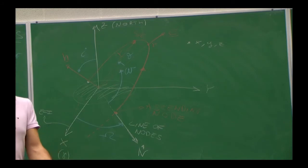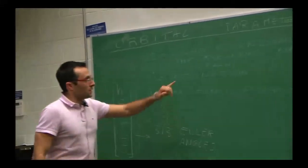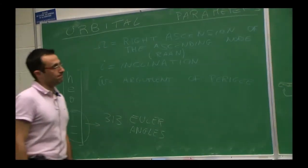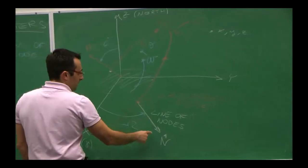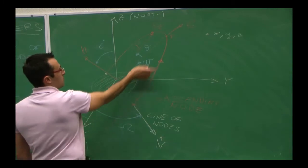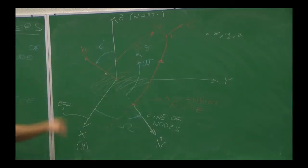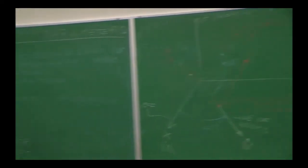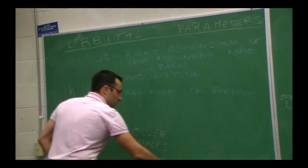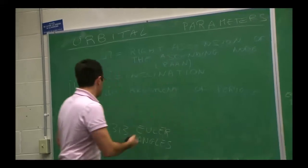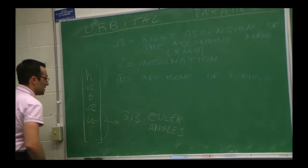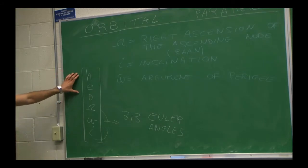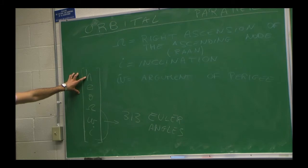There are 12 combinations for Euler angles; for orbital parameters, this 3-1-3 sequence is the one people use. Imagine starting from ECI, rotating the z-axis to get to the line of nodes, rotating about the line of nodes from z to h, rotating about h to find the eccentricity direction. Given R and V, the orbital elements are computed as follows: H equals R cross V. E equals (1/mu) times (V cross H minus R over its norm). Compute H and E — we've done this several times. These are the norm of h and the eccentricity magnitude.